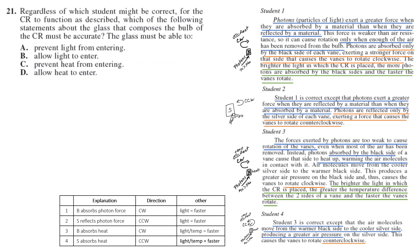Number 21, regardless of which student might be correct, for the CR to function as described, which of the following statements about the glass bulb must be accurate. Prevent light from entering? No. Choice B: allow light to enter. Absolutely. In student one, the photons cause a rotation. Student two, photons cause a rotation. Student three, the light generates heat. And student four, the light generates heat. So the light has to be able to enter. So the jar would have to be clear. The bulb would have to be clear. So B.